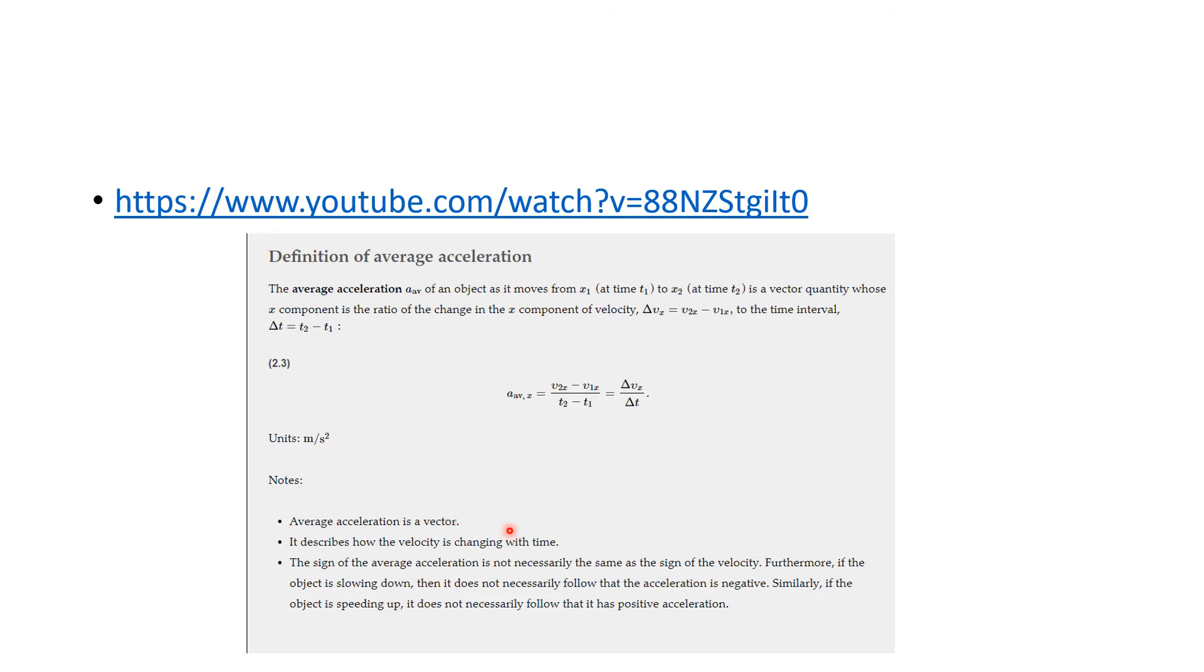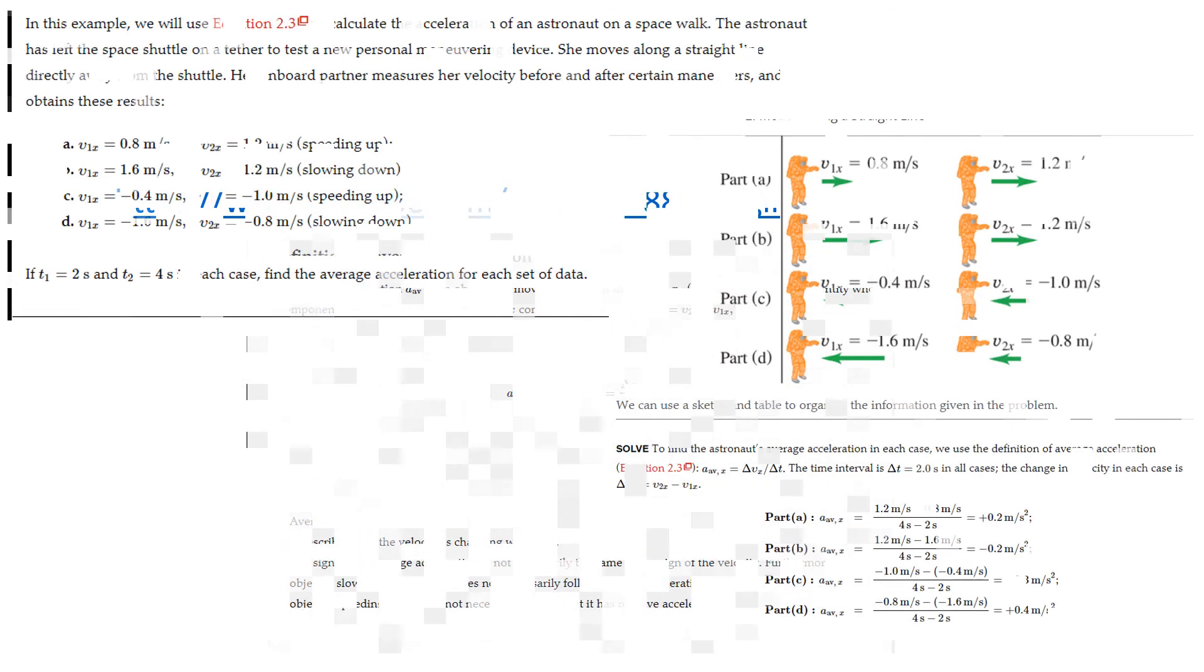You see units matter. Now, average velocity is a vector. It describes how the velocity changes with respect to time, and the sign of average velocity is not necessarily the same as the sign of velocity. Furthermore, if the object is slowing down, it does not necessarily follow that its acceleration is negative. Similarly, if it's speeding up, it does not necessarily follow that it has a positive acceleration. If you find that anything confusing, I have another chart that will deal with that.